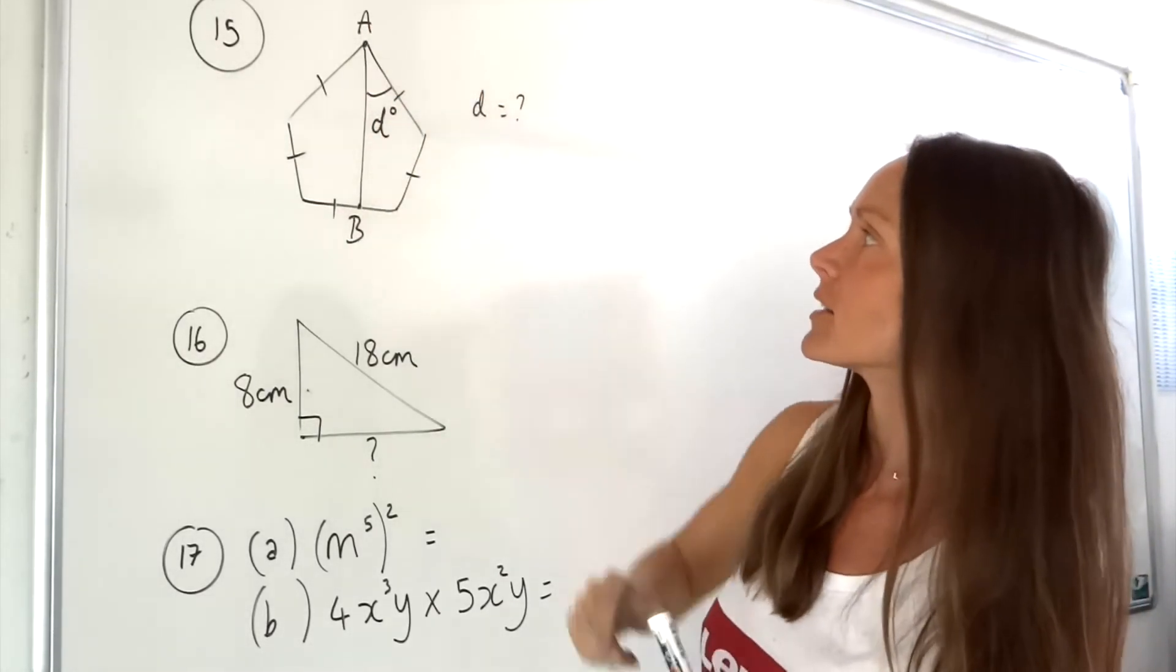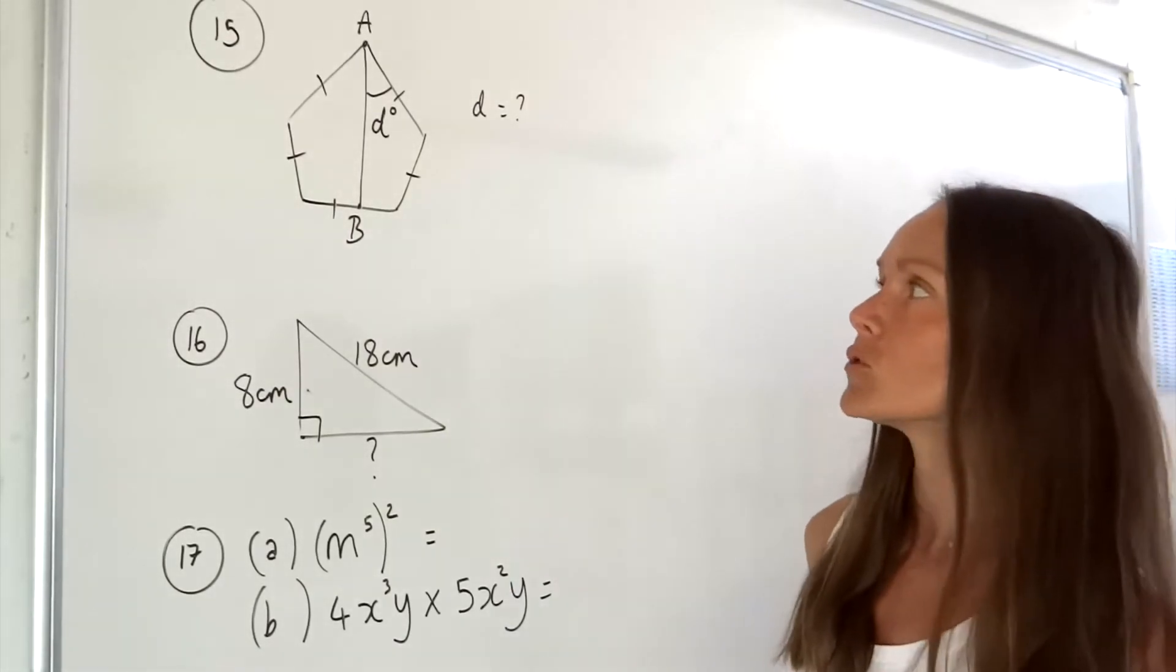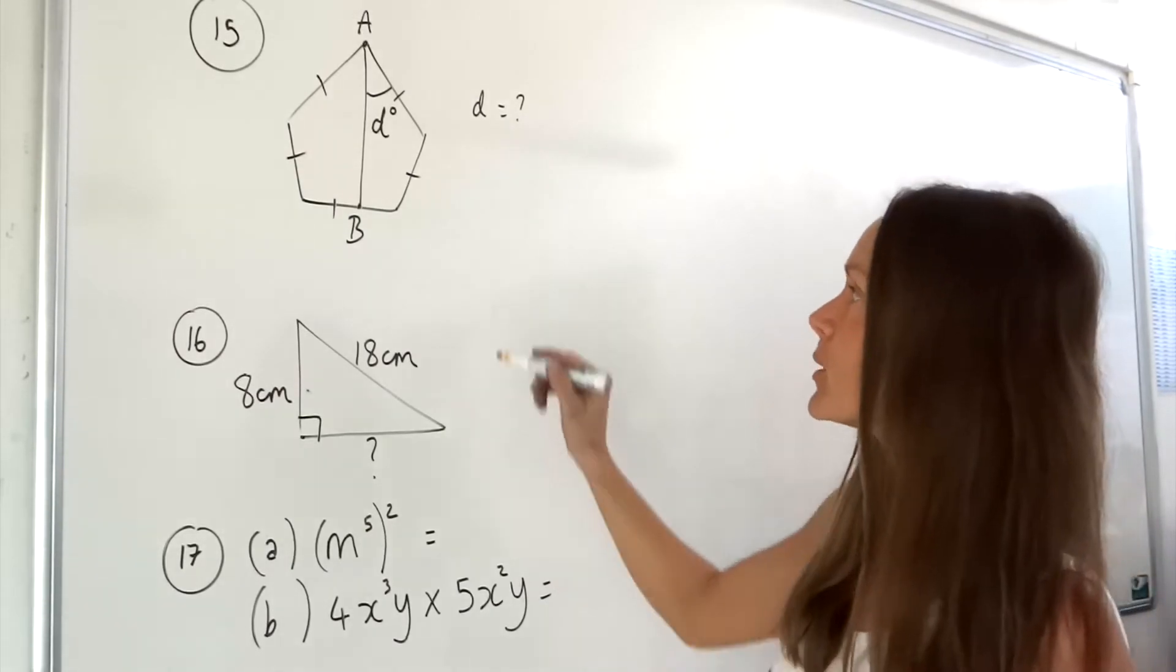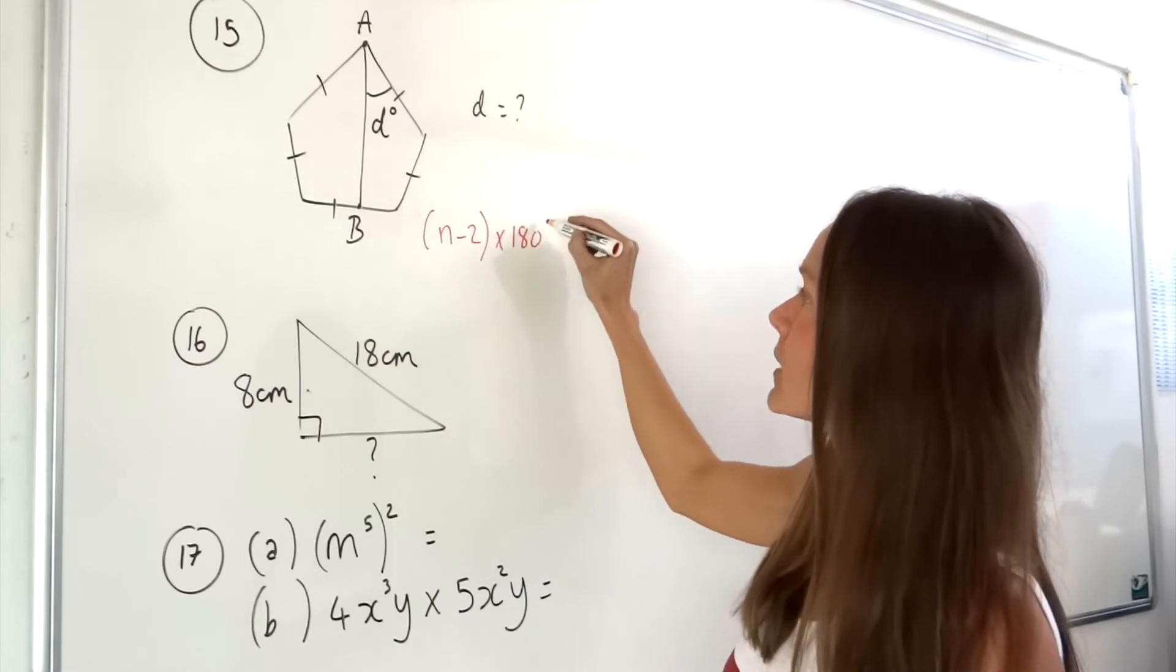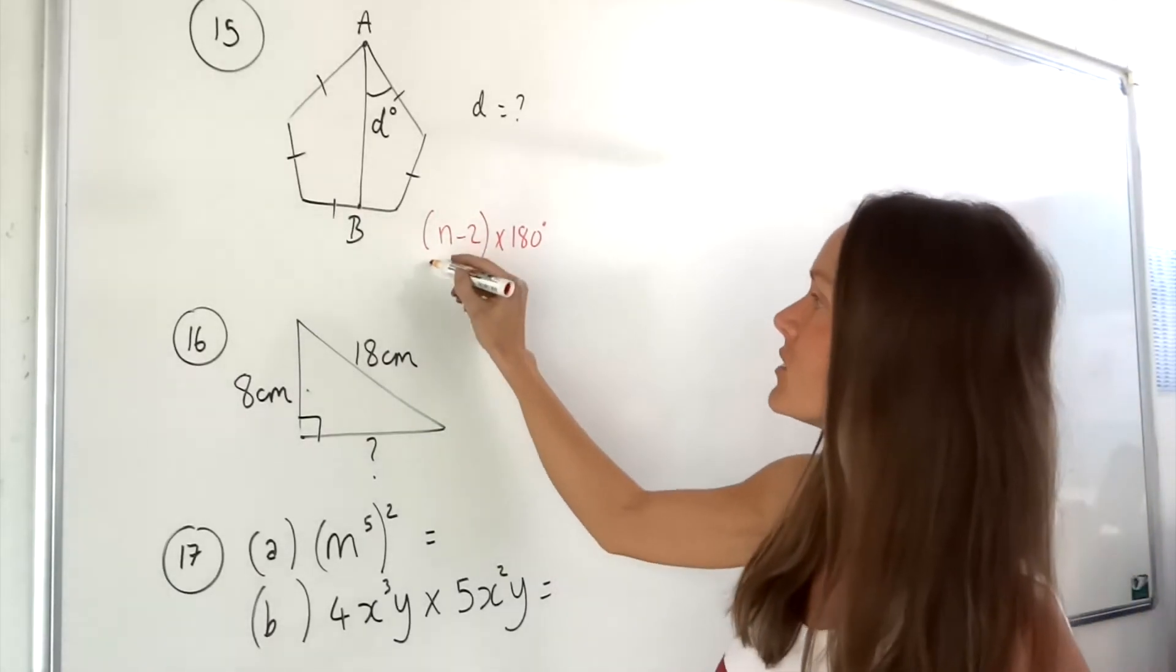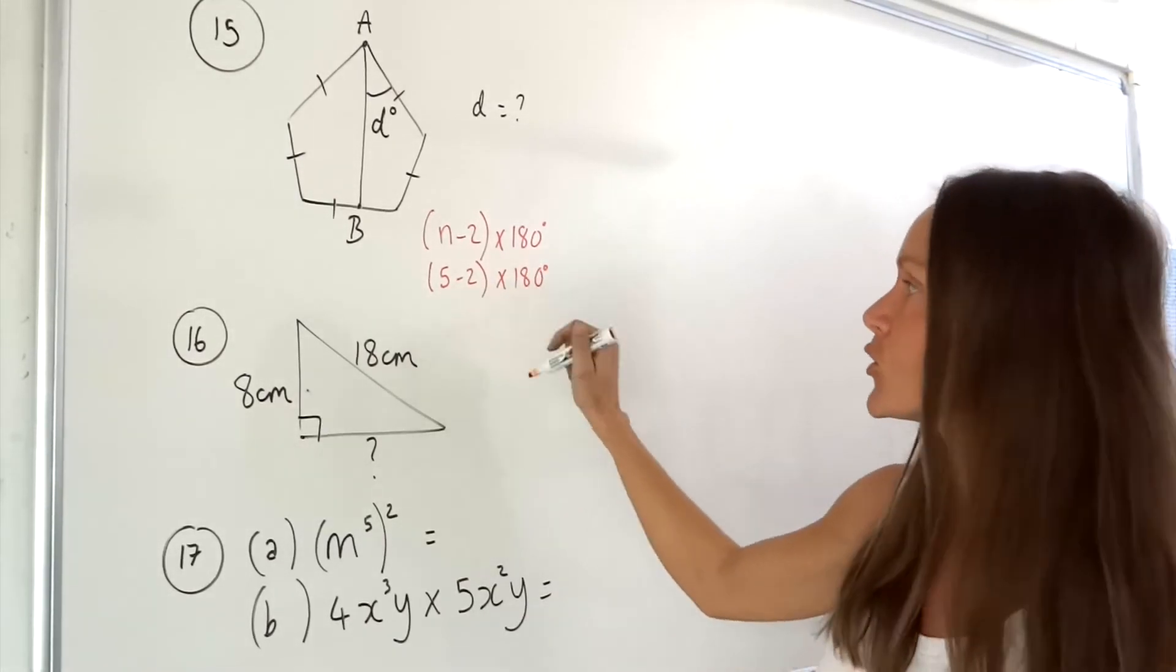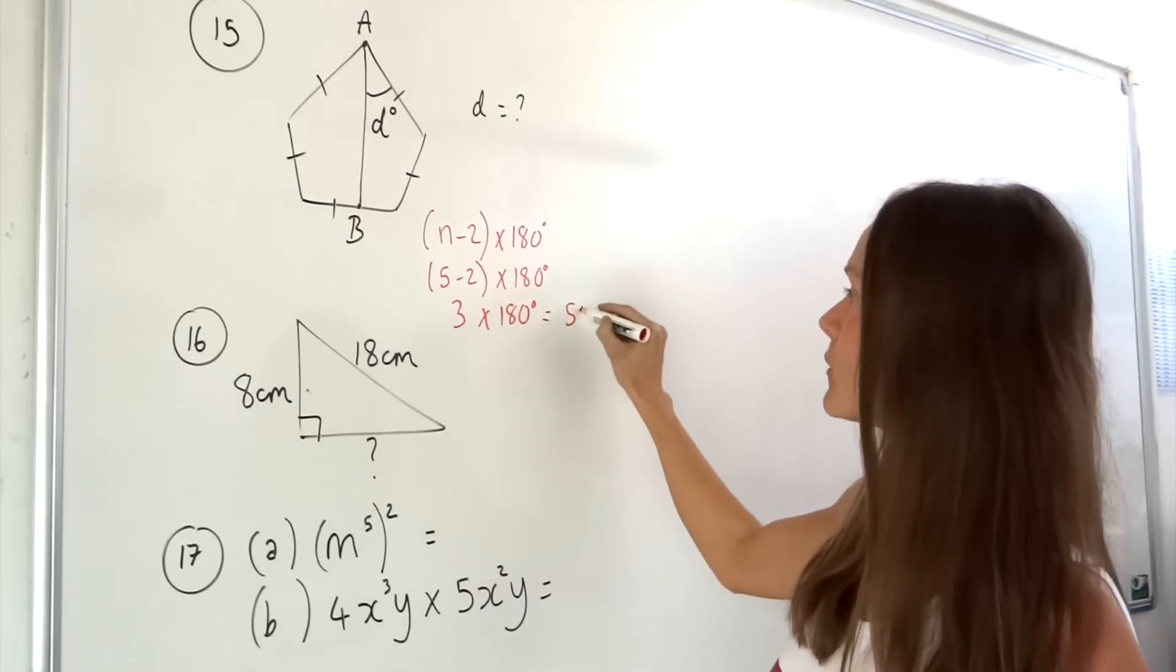Before we can work out the value of d it would be useful to know what all the angles are in a regular pentagon. To work out the sum of interior angles in any shape we have this formula here: n minus two times by 180. Now n is the number of sides, so in a pentagon we have five sides. If I work out what's inside the brackets, five minus two is three, and if I times by 180 I get 540 degrees.